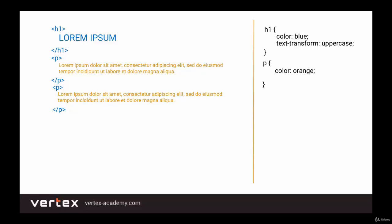What if we also want to make all the paragraphs in italic? No problem. We just add a property called FontStyle with the value italic. Now our two paragraphs are using italics. But what if we want the first paragraph to be of a different color — we don't want to apply it to all of the paragraphs. For that reason, we use a thing called a class. Class is a special attribute that gives a tag a special name, and that allows us to refer to that tag specifically.